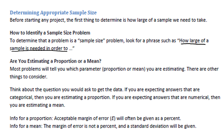Once you know it's a sample size problem, it could be for a proportion or it could be for a mean, and you've got to be able to tell which is which. Most of the problems will tell you which parameter you're estimating, but there are some other things to look for as well. Think about the question that you would ask to get the data. If you're expecting answers that are categorical, then you're probably working with a proportion. If you're expecting answers that are going to be numerical, then you're probably working with a mean.